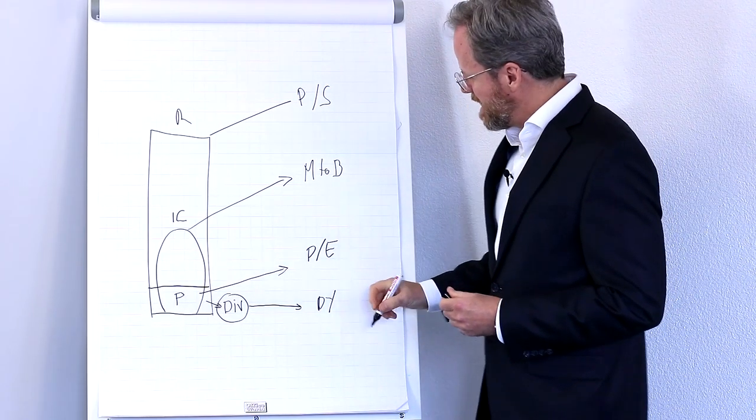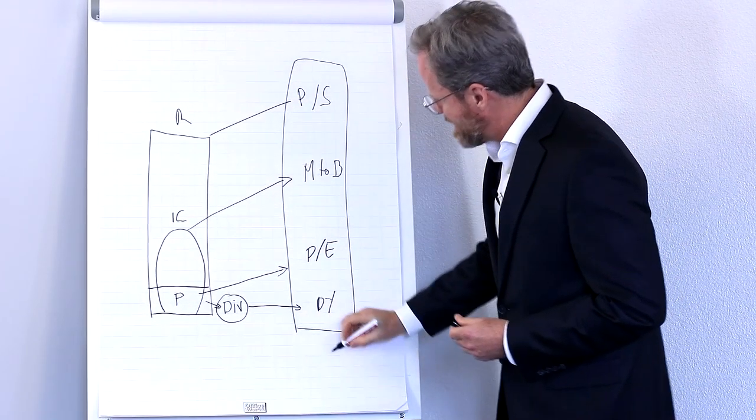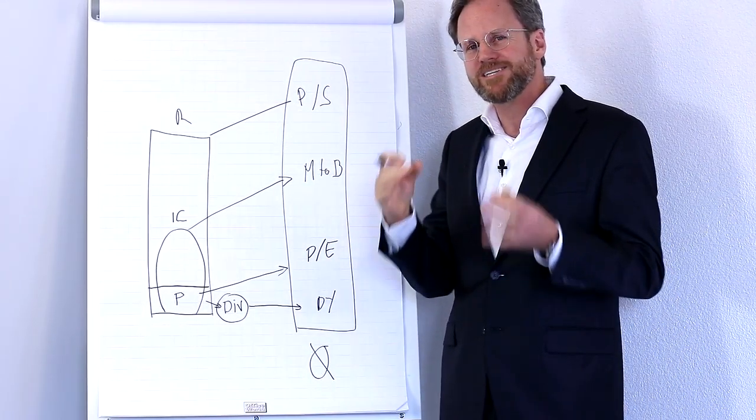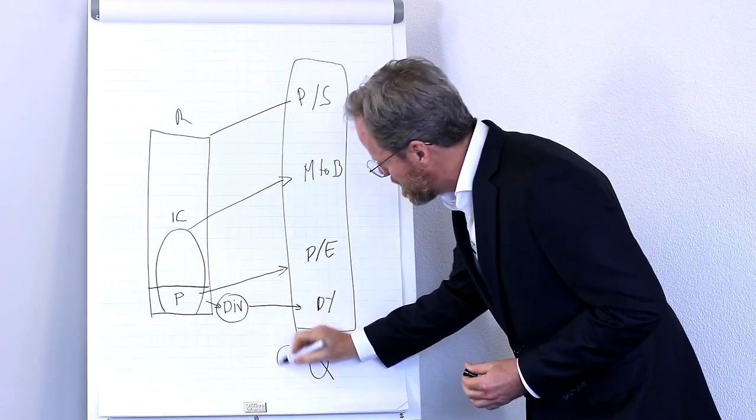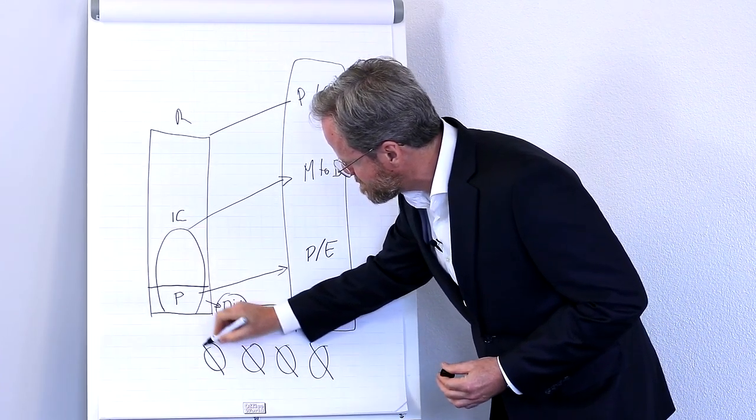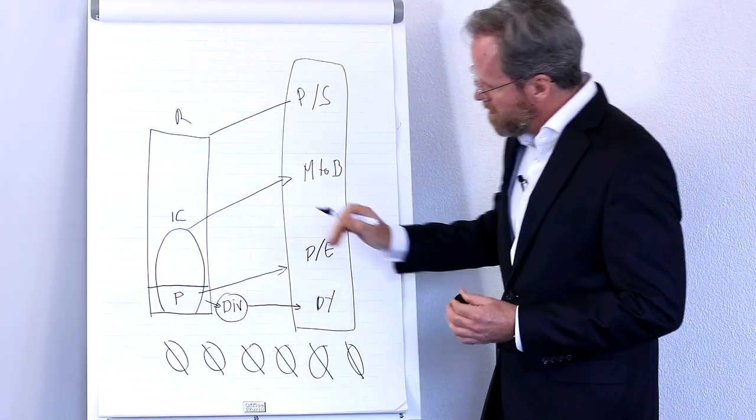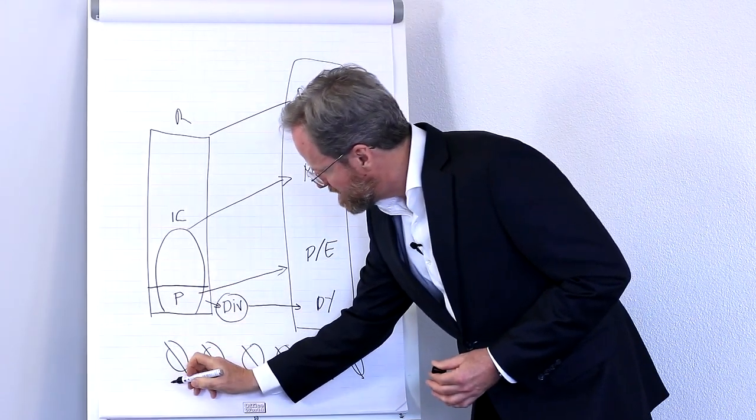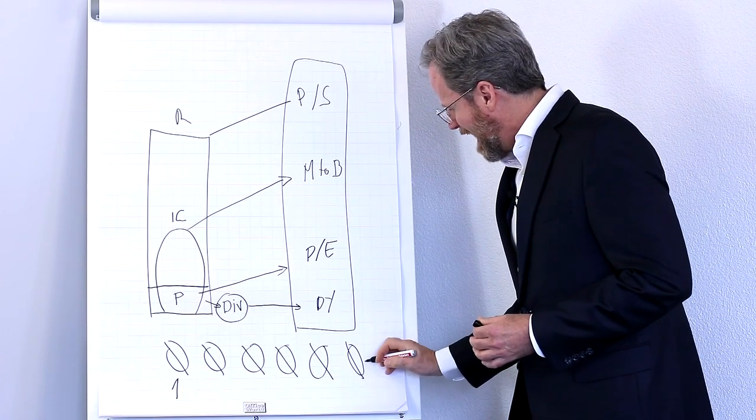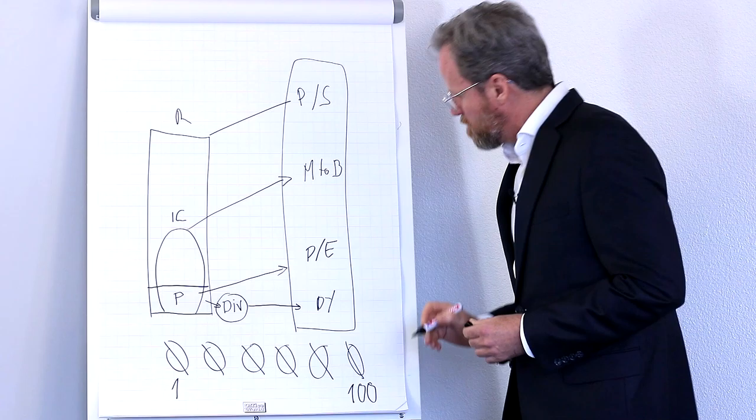We arrive at the consolidated rank by calculating the average of all these ranks. And then we do the same thing again. We calculate averages for all other companies and the company with the lowest average gets a consolidated value rank of 1. And the one with the highest average gets a consolidated value rank of 100.